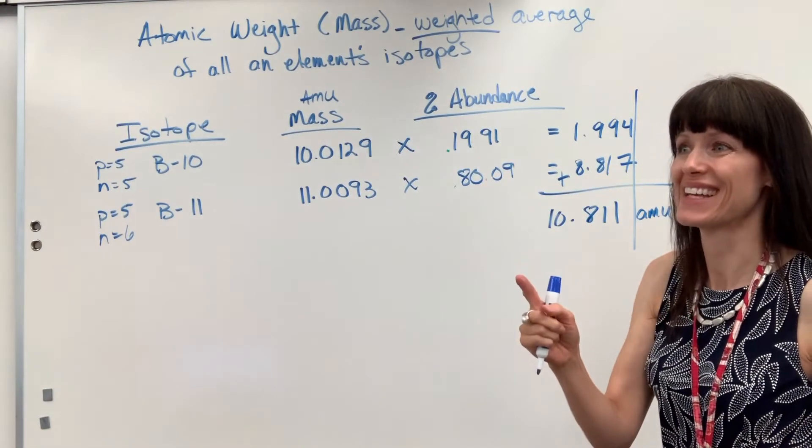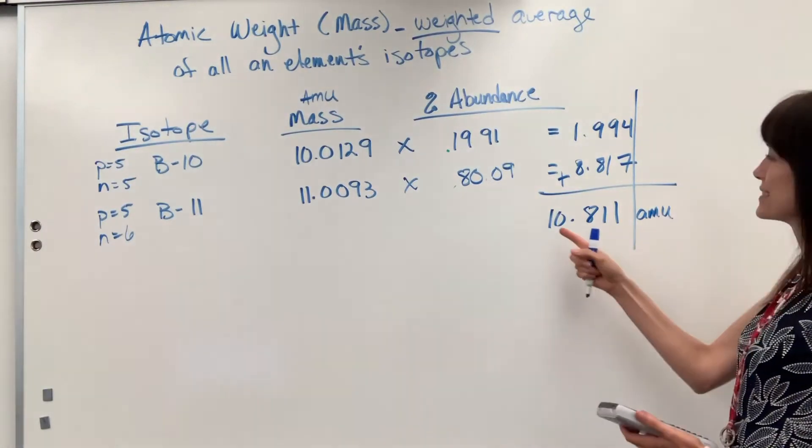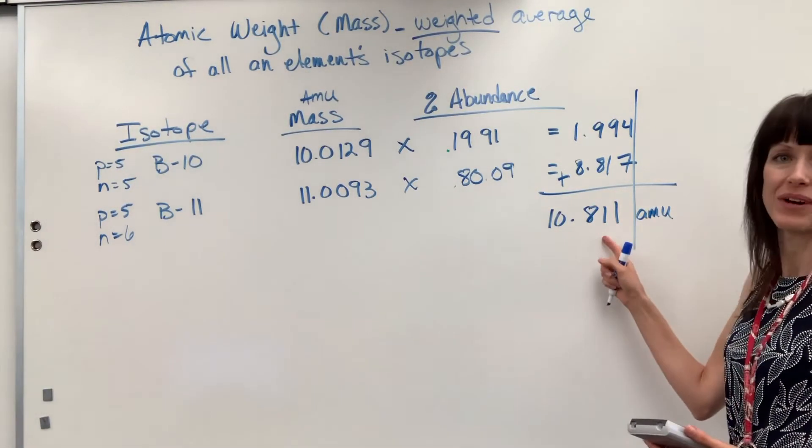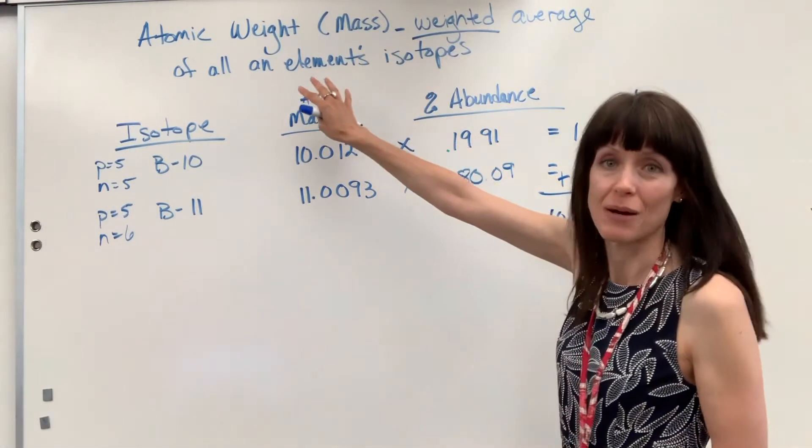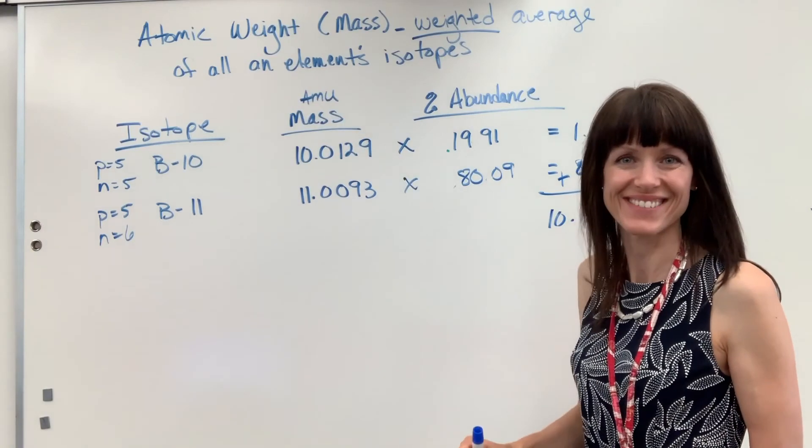And if you look at the periodic table, right on the money, boron says 10.811 is the atomic mass unit for the atomic weight, the atomic mass. Great. Good work.